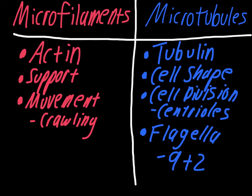Overall, for the big picture: the cytoskeleton is ultimately there to support the cell — that's its main function. It does have to do with movement a little bit, and you should definitely know what each type is composed of, specifically the proteins that make up each skeleton type.